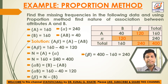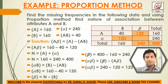After finding this, we will find alpha_beta. Alpha_beta = beta minus A_beta. Beta = 240 and A_beta = 120, so alpha_beta = 240 minus 120 = 120.